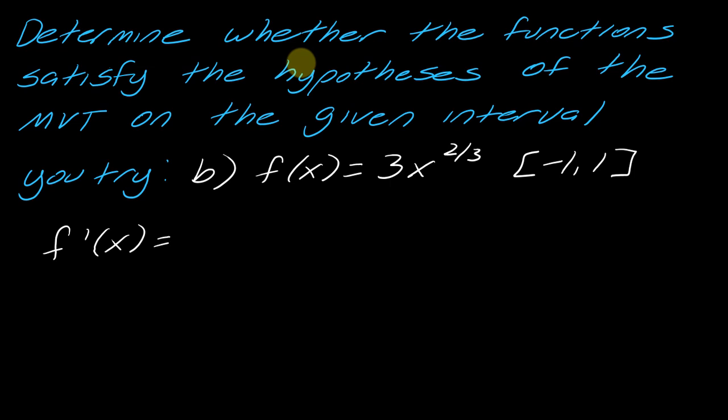So this will be 2x to the negative 1/3, which is really f'(x) = 2 over the cube root of x. Well, now we have once again that same thing. 0 is not, this is not going to work at x equals 0. And 0 is actually on the interior of this point.